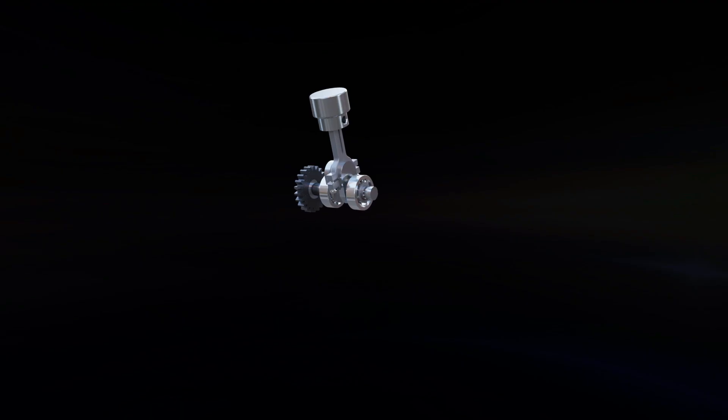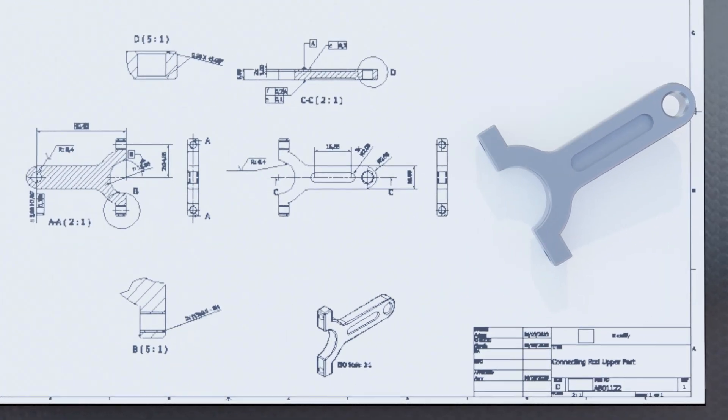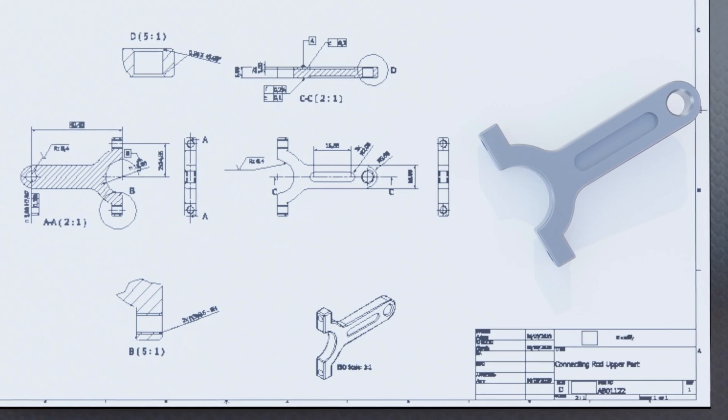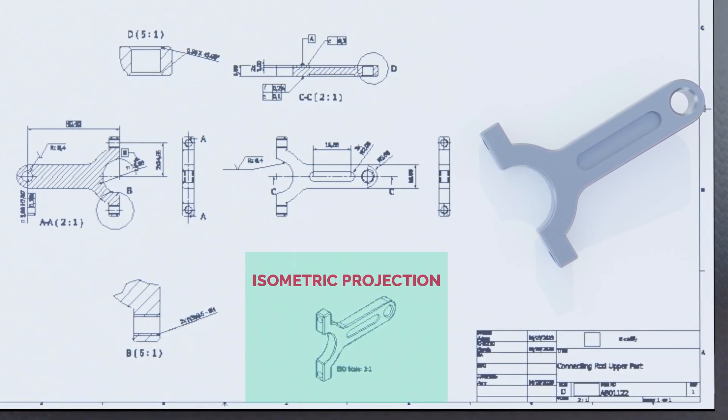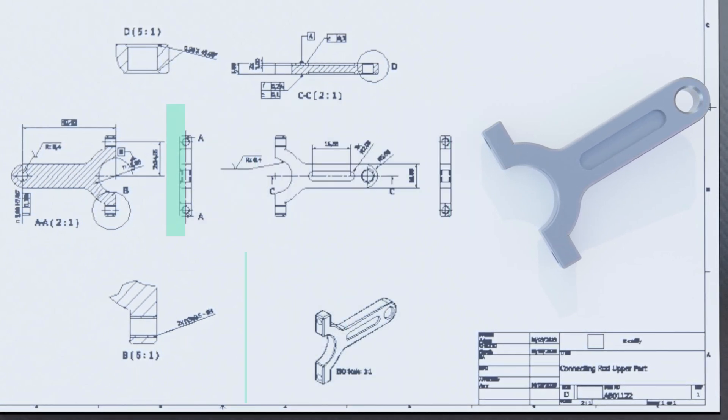Projection is the process of representing the 3D object on the drawing sheet. There are different types of projection. Mainly two projection methods are used in modern technical drawings: isometric projection and orthographic projection. Let's study those in more detail.